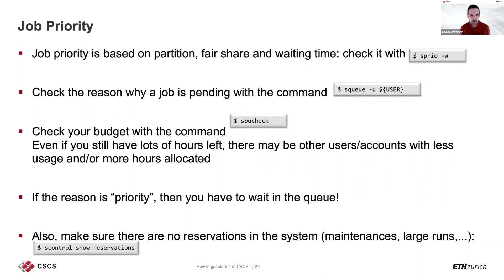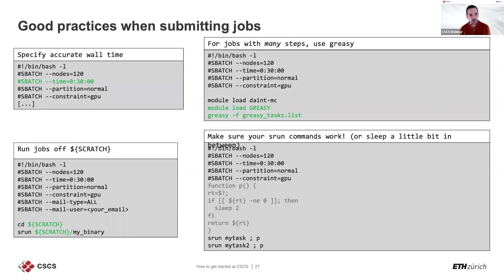From time to time you may need to check for maintenance activities on the system. We usually inform you via the CSCS mailing list. In these cases there will be reservations on the system that prevent you from running. Reservations can be visualized with 'scontrol show reservations'.